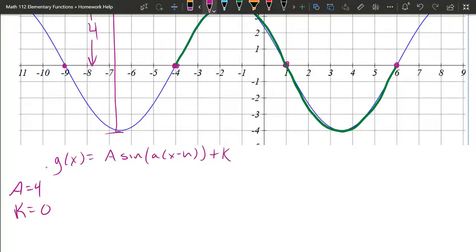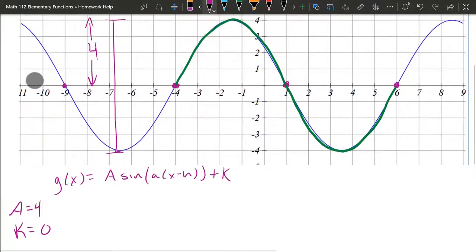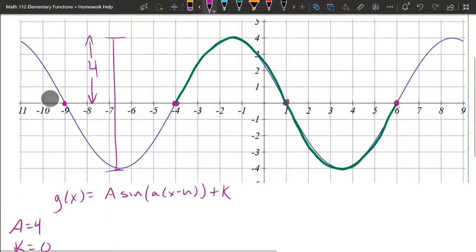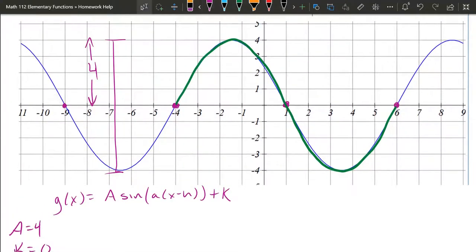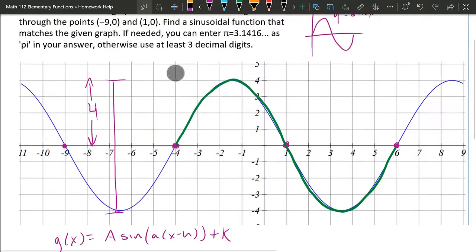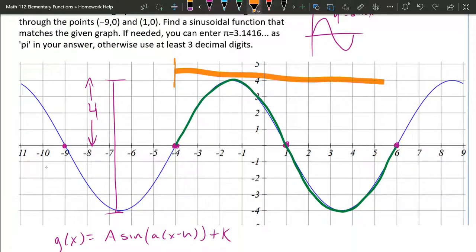Alright, so those are the easier ones to get. Let's now think about the horizontal here. We have to measure a period. So the period starts at four, negative four, ends at six. So that period is ten.